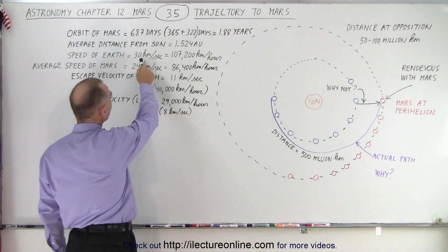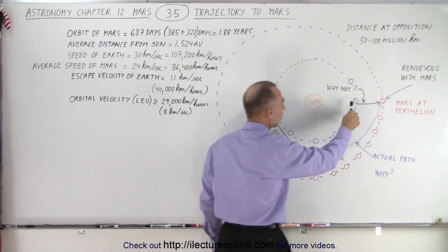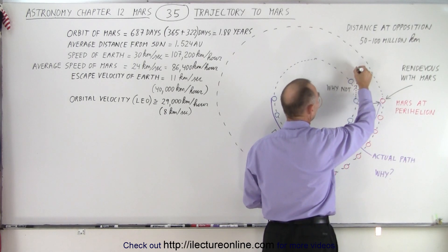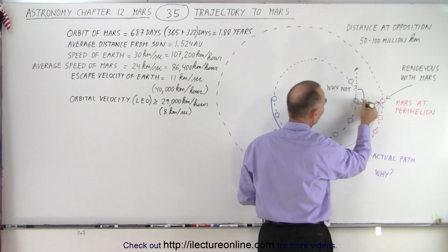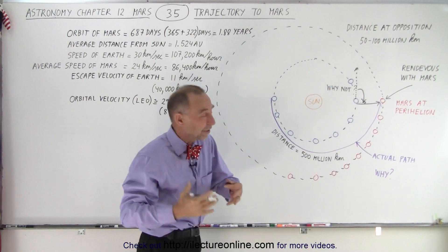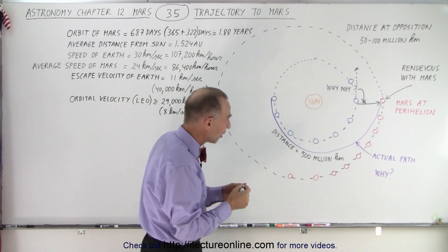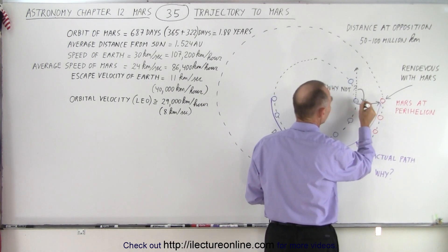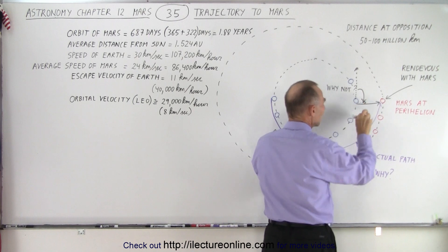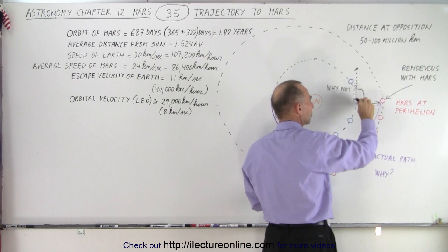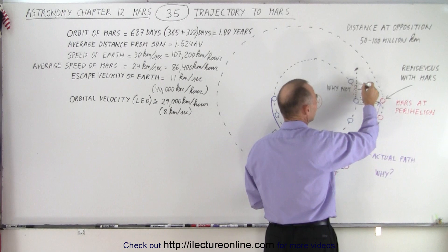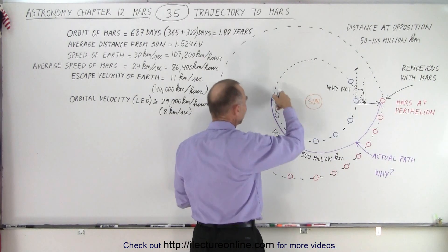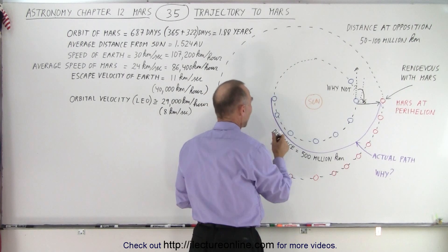So when the Earth is moving at 30 kilometers per second around the Sun, over here, notice the Earth will be moving really fast in this direction. And if you send the spacecraft in this direction, of course, at a much slower speed, because you don't have enough energy to get it going that fast, notice what will happen. Instead of traveling straight across when the distance is small right here, the spacecraft, because of the sideways velocity that it will have, because it comes from the Earth, will cause the spacecraft to travel like this.